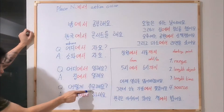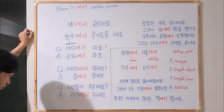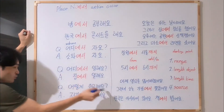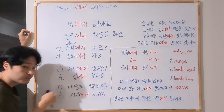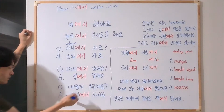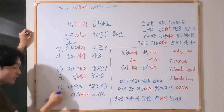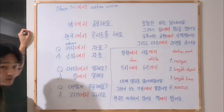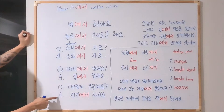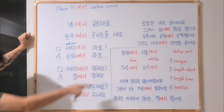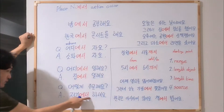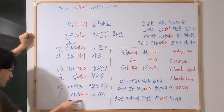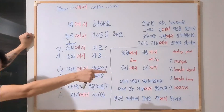주문해요 means 'to order something.' 어디에서 주문해요? — Where can I order? Or 어떻게 주문해요? — How can I order? The answer can be 저기 — over there. 저기에서 하세요 — please do it from there.